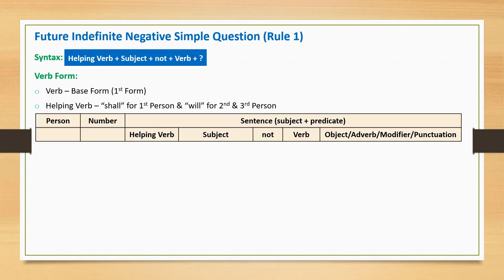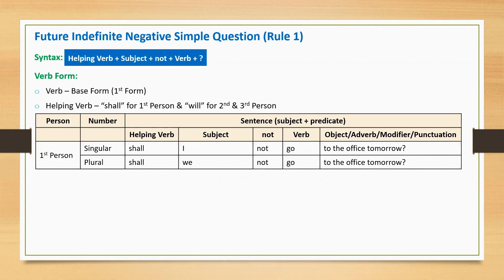Look at the following sentences. First person singular: 'Shall I not go to the office tomorrow?' This sentence starts with helping verb 'shall', followed by subject 'I', negative word 'not', main verb 'go', and a question mark at the end. First person plural: 'Shall we not go to the office tomorrow?'